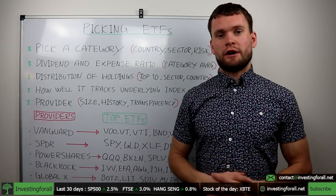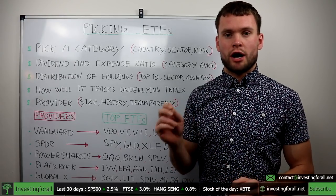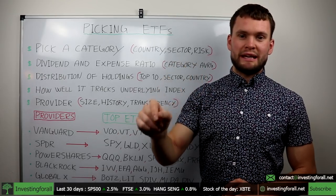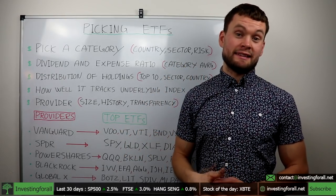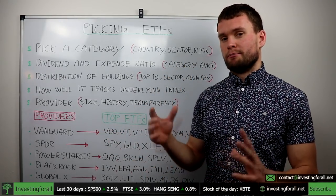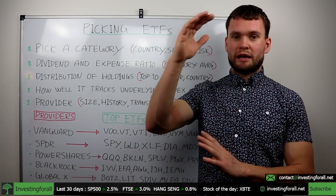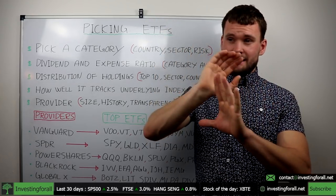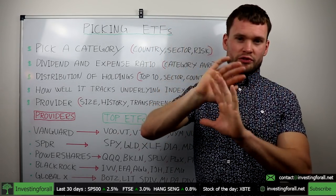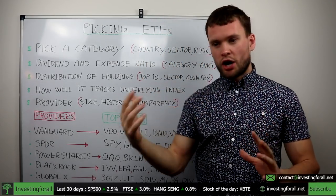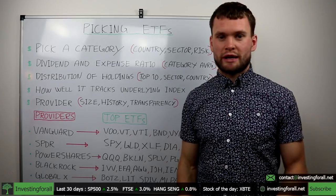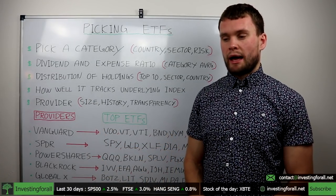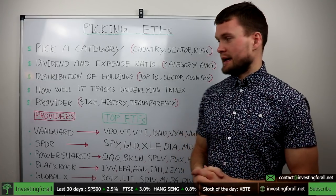If you want to find an ETF, I recommend www.etfdb.com — that stands for ETF Database. They have a really good screener where you can pick through ETFs based on anything: commodities, equities, bonds, real estate, high risk, low risk, mid cap, small cap, Asia, Russia — whatever you want. That's where I find my ETFs.